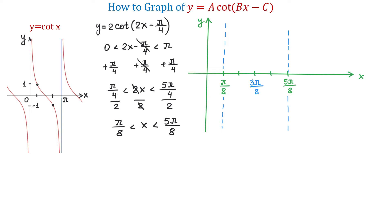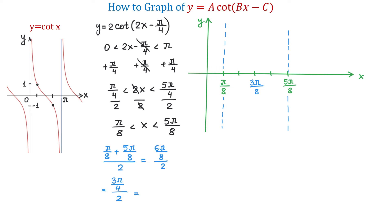To find the x-intercept algebraically, we add pi over 8 and 5 pi over 8 and divide the result by 2. Pi over 8 plus 5 pi over 8 makes 6 pi over 8. We can reduce 6 pi over 8 by dividing top and bottom by 2, giving us 3 pi over 4. Then 3 pi over 4 divided by 2 equals 3 pi over 8. This is the x-intercept of the function between these two asymptotes.